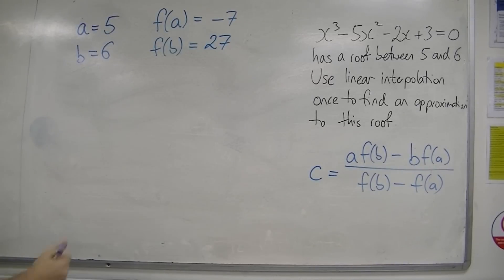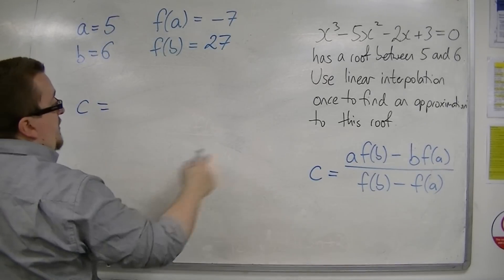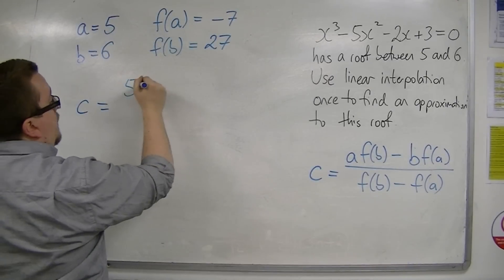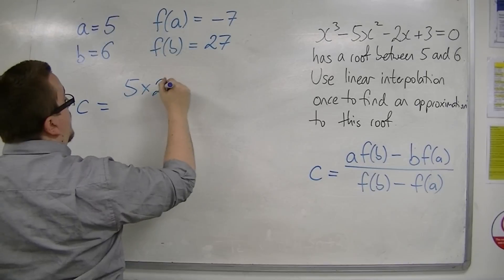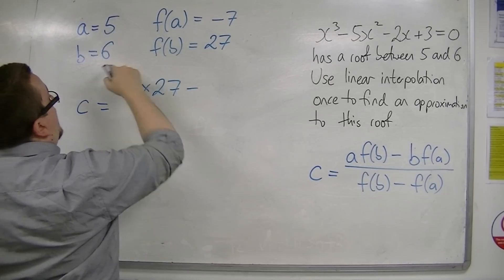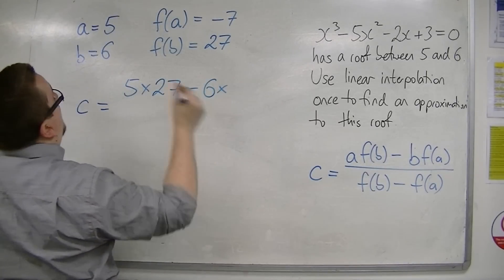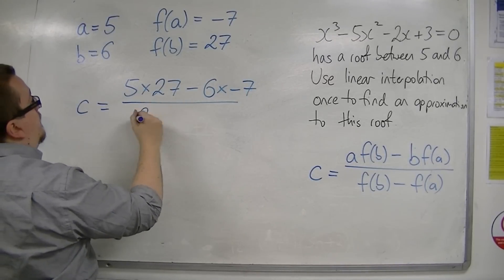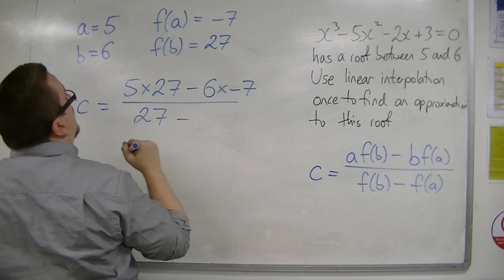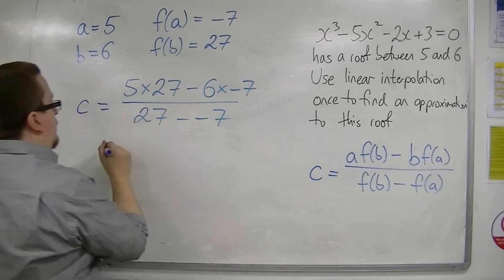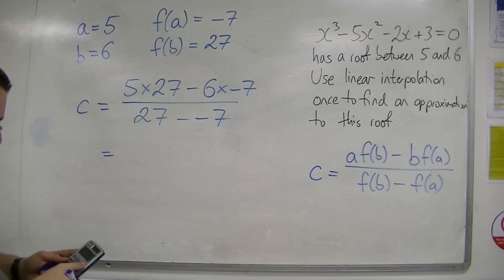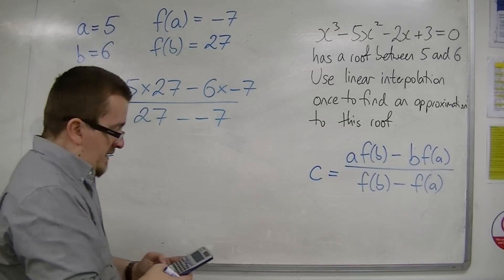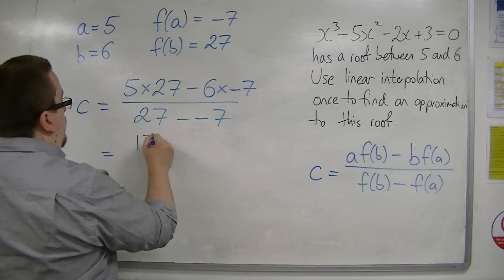OK, so c is equal to a times f of b, take away b times f of a. So we've got 5 times 27 take away 6 times minus 7, so plus 6 times 7 on the top, 177.